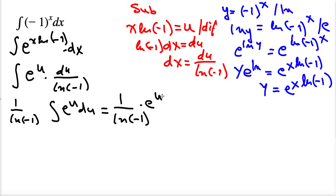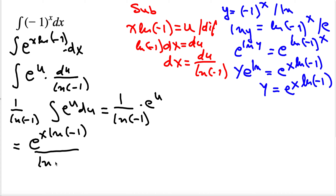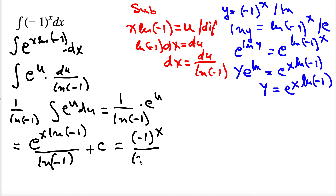So everything here is (1/ln(-1)) times e^u plus c. Now we are going to return to the original substitution. Instead of u we write x·ln(-1), so this integral is going to be e^(x·ln(-1)) divided by ln(-1). And since e^(x·ln(-1)) is equal to (-1)^x, this becomes (-1)^x divided by ln(-1) plus c.